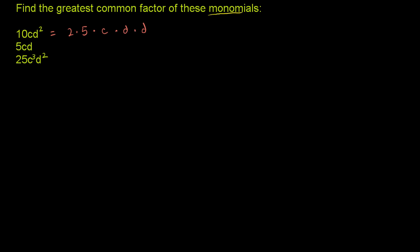Now let's do 5cd. Well, 5cd — 5 is prime, so its prime factorization is literally just 5. c — you can't break that down anymore, that's just a c — and then times a d. So we really didn't do anything to this expression.